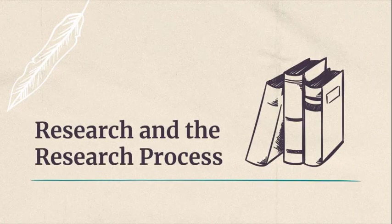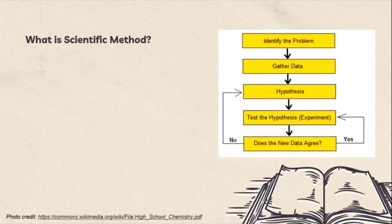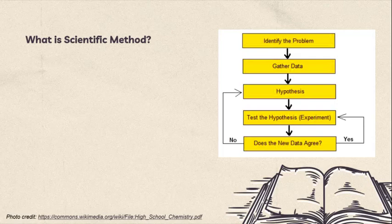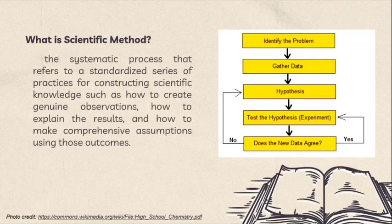Research and the Research Process. Before we discuss the research designs and methods in social sciences, let us first discuss what is scientific method. According to Anil Bhattacharjee's social science research, principles, methods, and practices in 2012, scientific method is the systematic process that refers to a standardized series of practices for constructing scientific knowledge such as how to create genuine observations, how to explain the results, and how to make comprehensive assumptions using those outcomes. It is a set of processes that people can utilize to gather scientific knowledge about anything under the sun, to enhance that knowledge, and by acquiring knowledge, to try interpreting why and or how numerous phenomena happen.